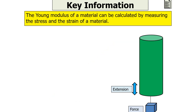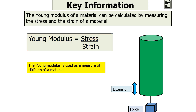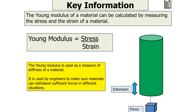The Young Modulus of a material can be calculated by measuring both the stress and the strain, because the Young Modulus is the stress divided by the strain. We can consider it to be a measure of the stiffness of a material, and it is used by engineers to make sure materials can withstand sufficient forces in different situations.